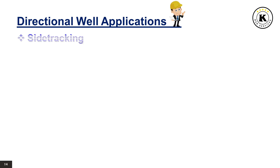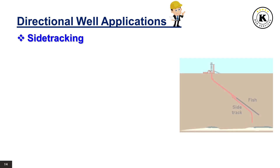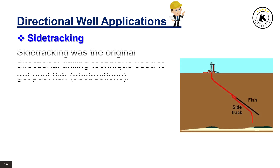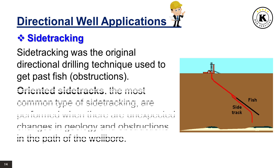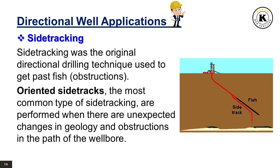Directional Well Applications — Side-Tracking: Side-tracking was the original directional drilling technique used to get past fish obstructions. Oriented side-tracks, the most common type of side-tracking, are performed when there are unexpected changes in geology and obstructions in the path of the wellbore.